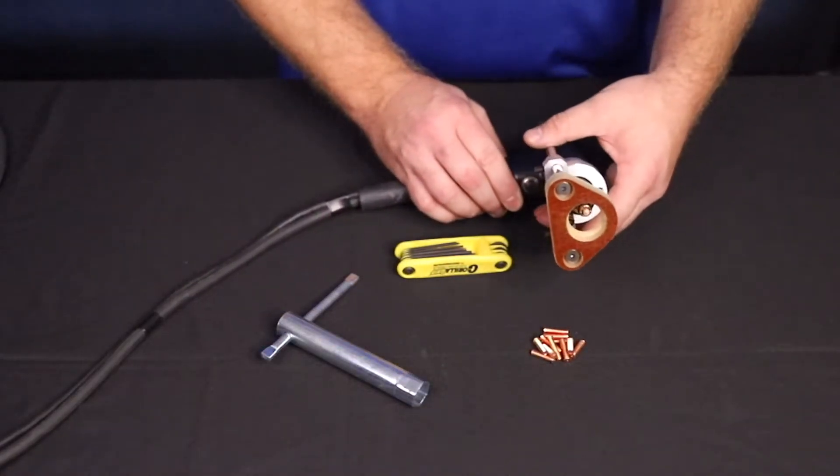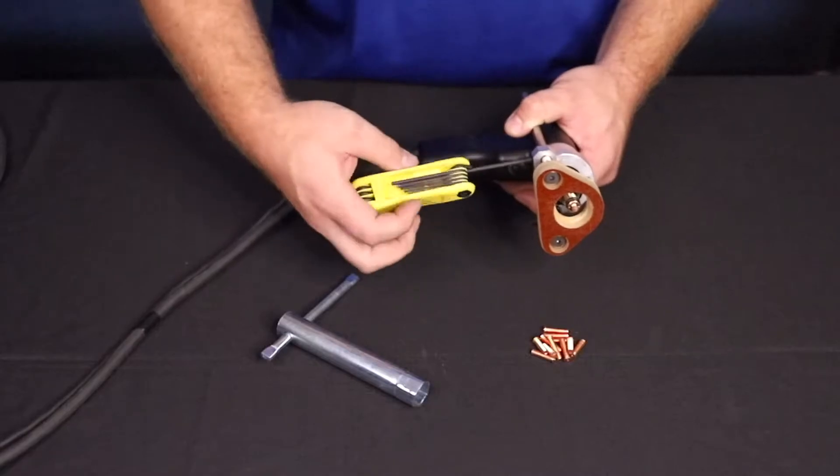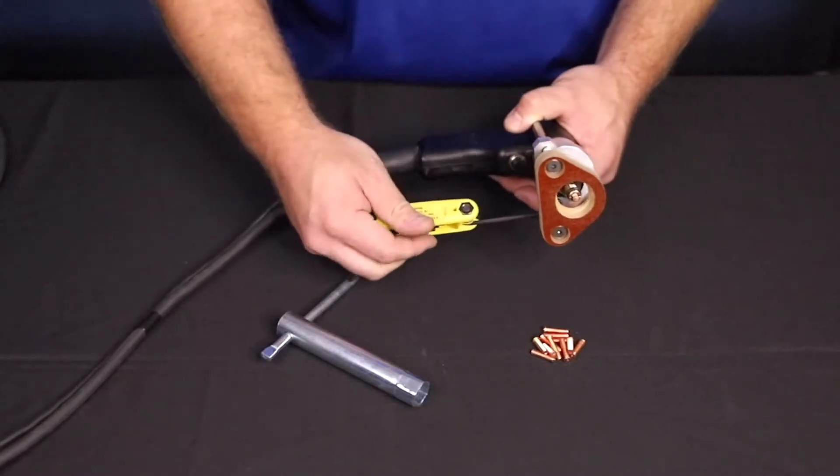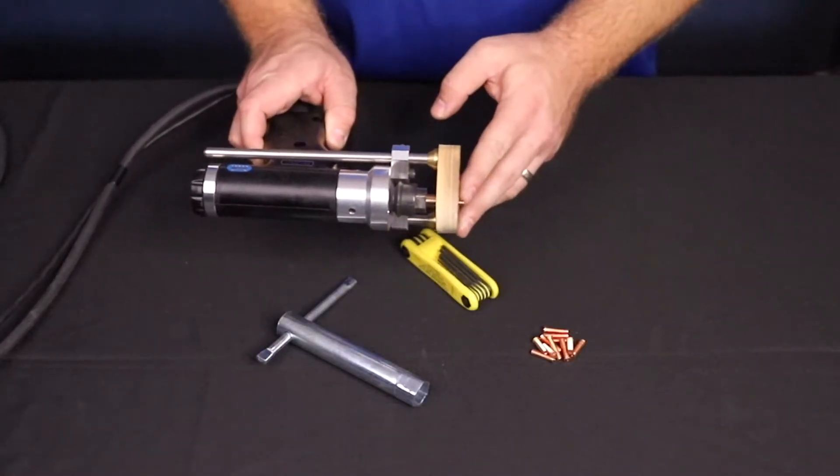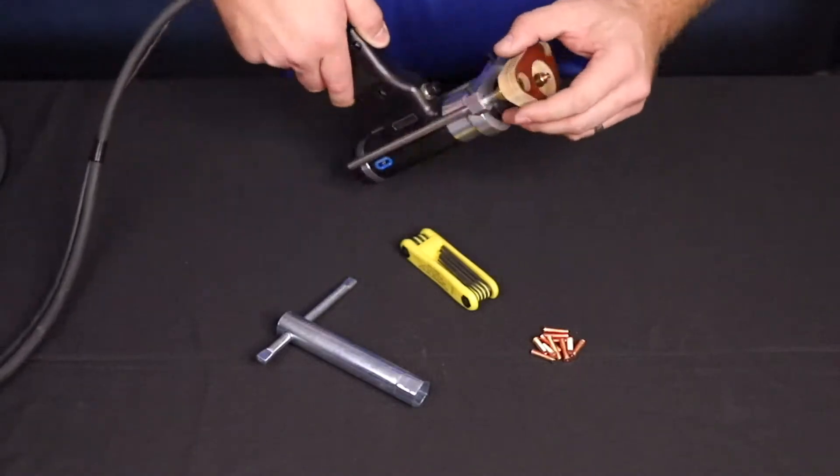Insert the foot piece leg assembly into the faceplate. Note the depth adjustment locking screws. Adjust the foot piece to achieve one-eighth of an inch of stud stick out past the foot piece.